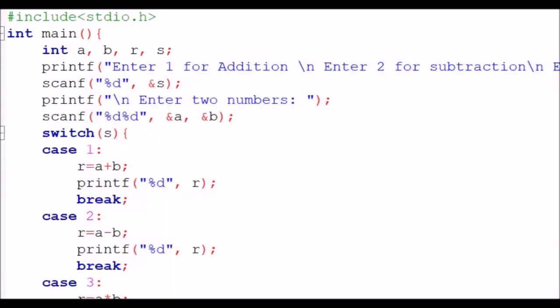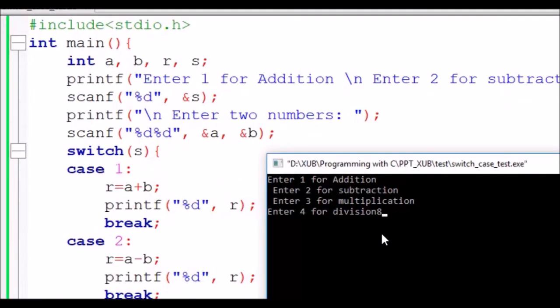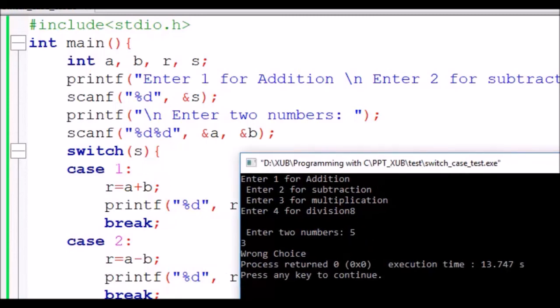Now what will happen if I enter some option, say I am entering 8. 8 is not there as a choice. So it is asking enter 2 numbers. See, wrong choice. So what choice you had made, that is wrong.